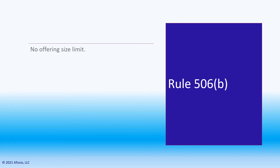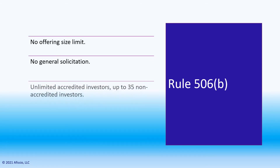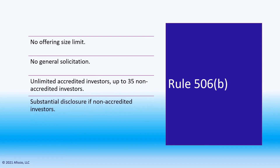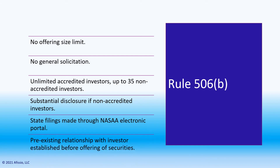Rule 506B is the most popular exemption among private funding transactions. Although you are unable to advertise your offering, you have an unlimited offering size limit, you can take some non-accredited investors, and most SEC and state filings can be made electronically. This makes the filing process very efficient. You are, however, required to have a pre-existing relationship with each of your investors under this rule.